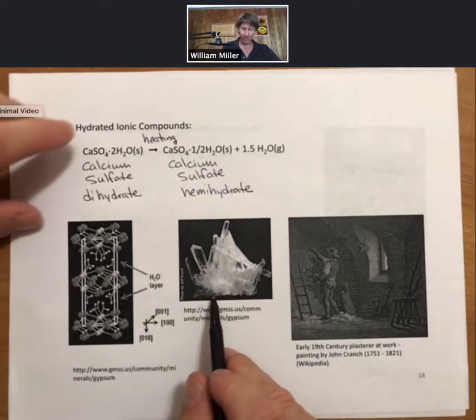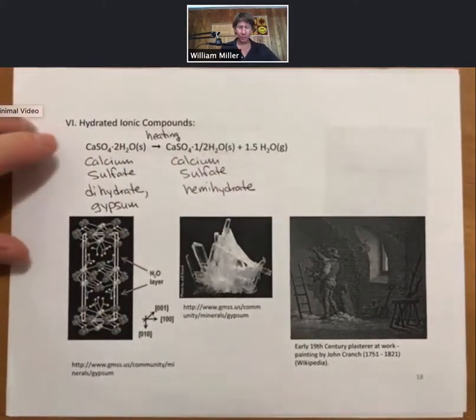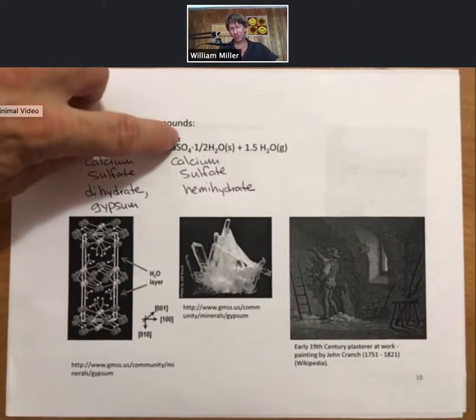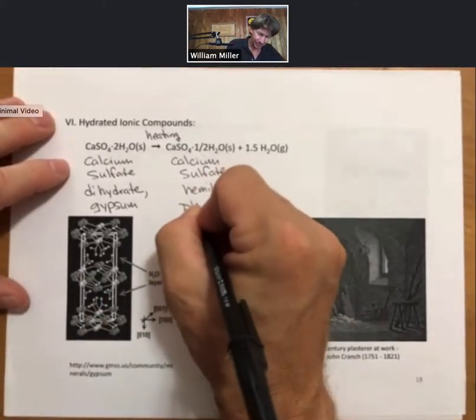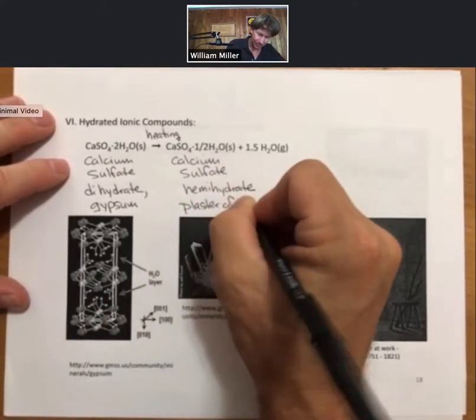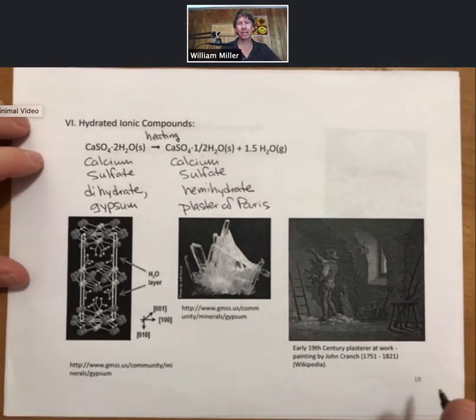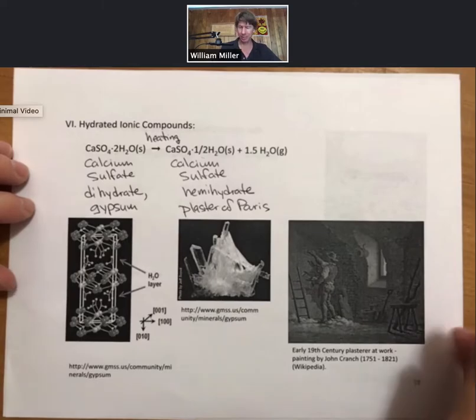This one, gypsum, that's going to be the common name for calcium sulfate dihydrate. If you can heat it, you can turn that into plaster of paris. And each of these has slightly different properties based on the number of waters of hydration in them.